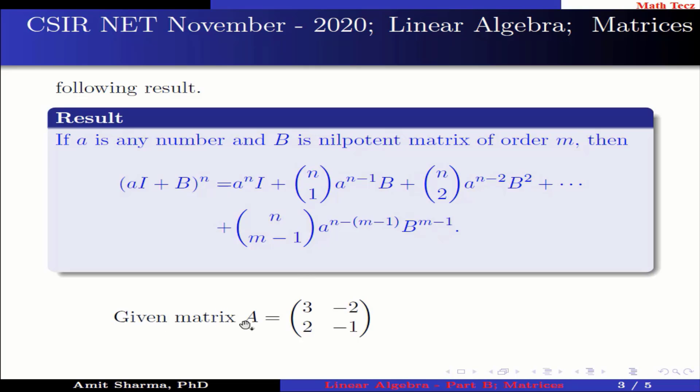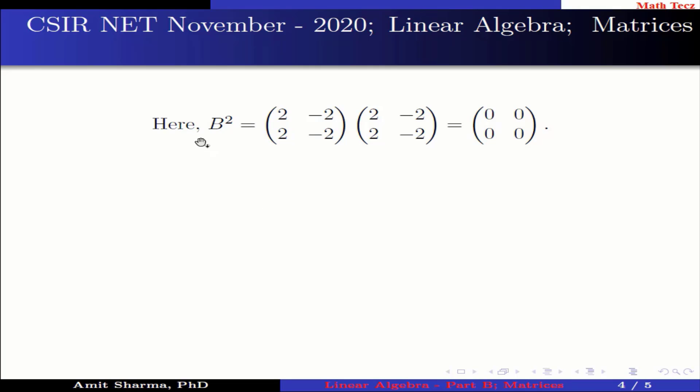Now the given matrix A having the element 3, -2, 2, -1, which can be written as sum of two matrices: identity matrix and the matrix having the element 2, -2, 2, -2, say it be B. Here B squared is a zero matrix, which implies B is a nilpotent matrix of index 2.